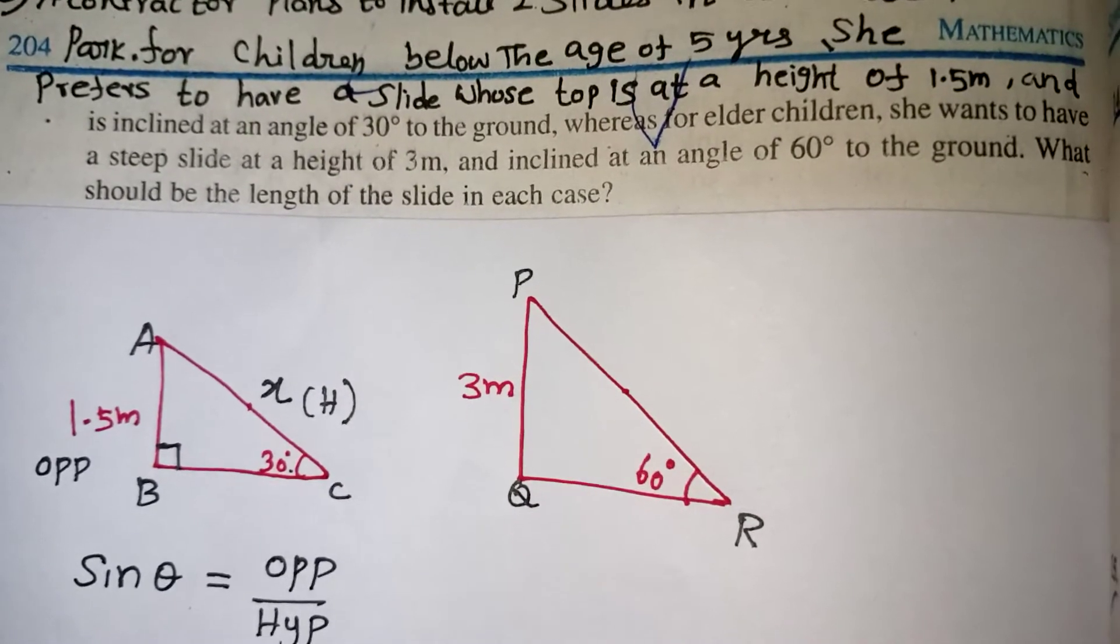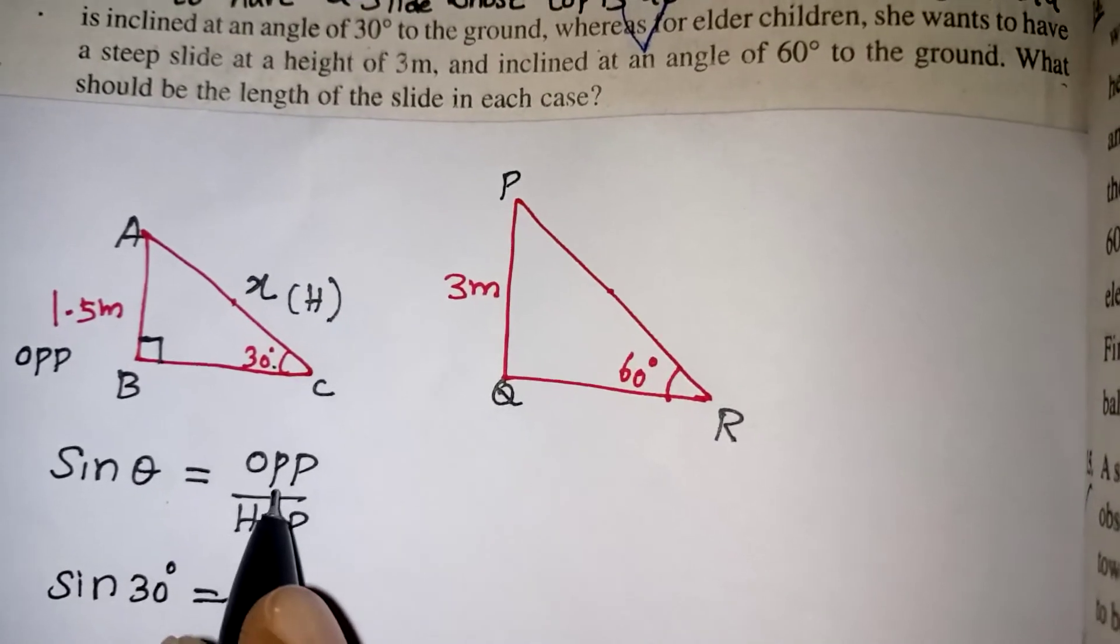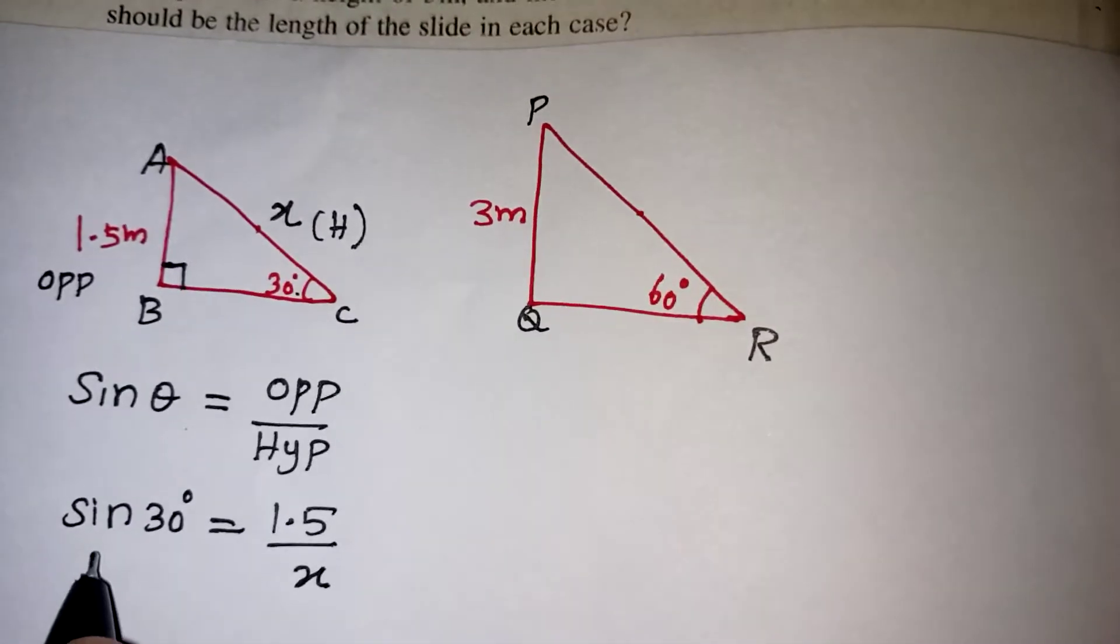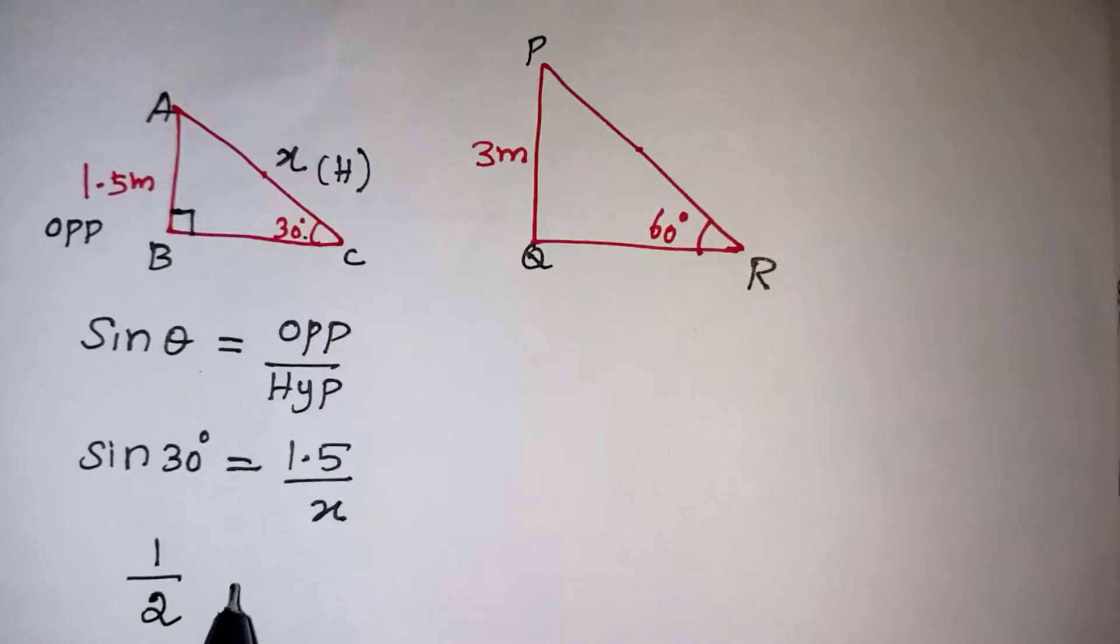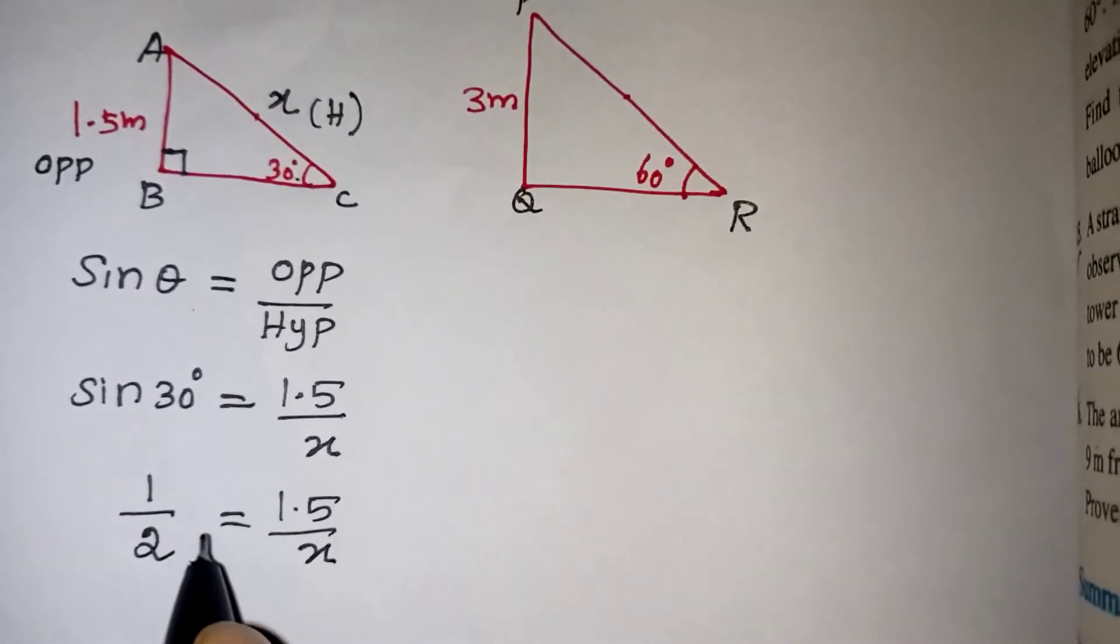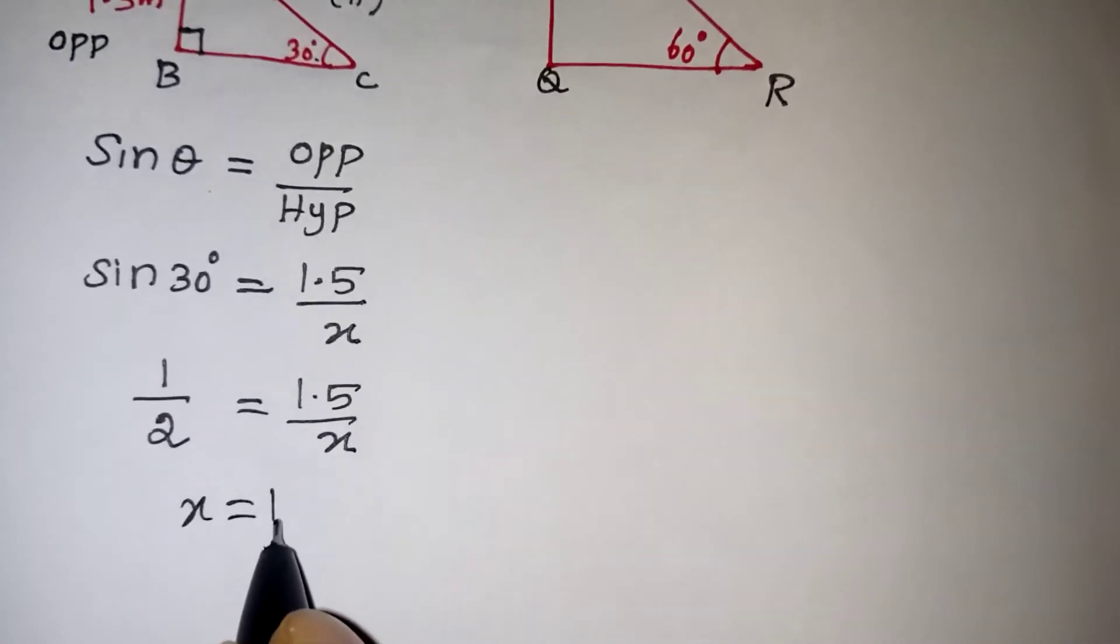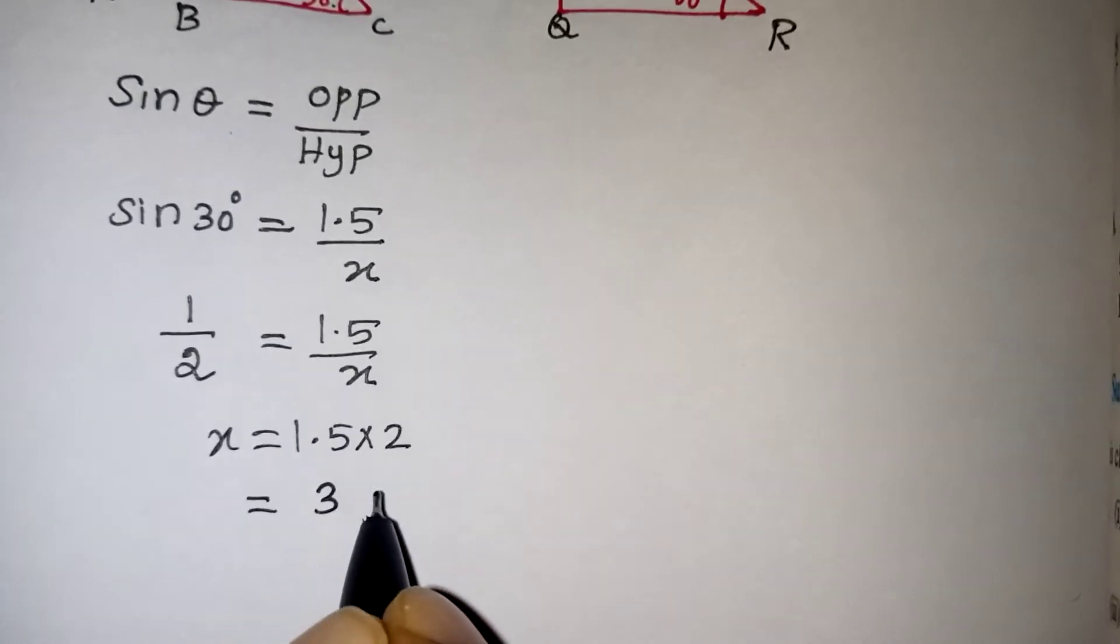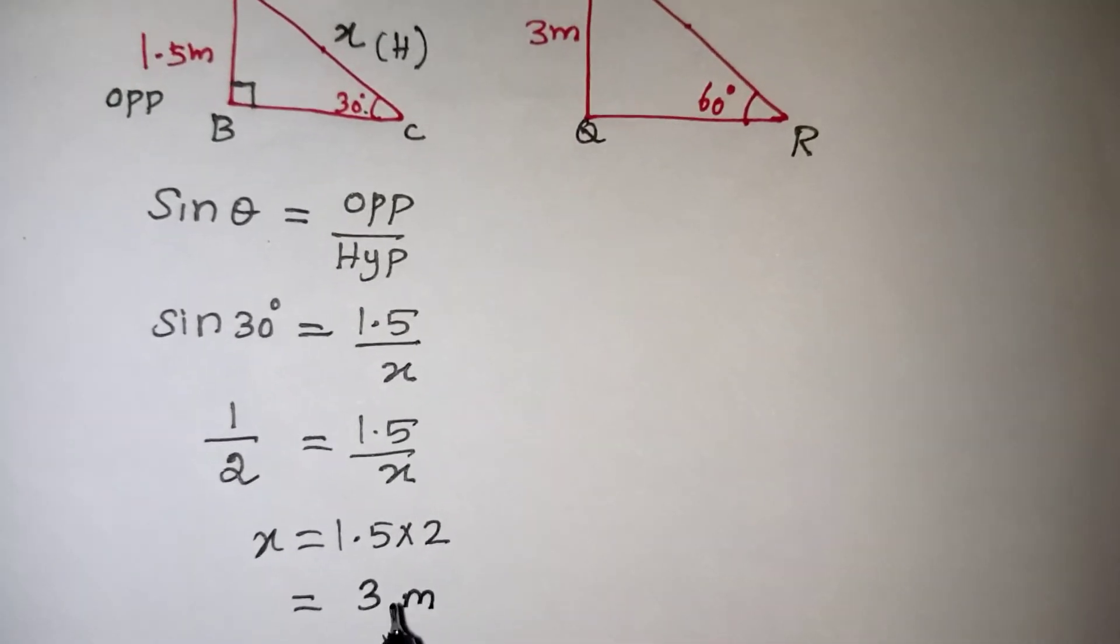So sin, in the place of theta just take that 30 degree, which is equal to opposite side 1.5 and your hypotenuse side is X. Sin 30 degree value from the table, that is 1 by 2, which is equal to 1.5 by X. Do the cross multiplication. X is equal to 1.5 multiple by 2. 1.5 twos are 3. So 3 meter. So that is the answer for the small children.